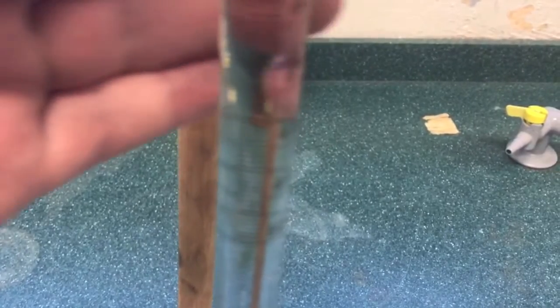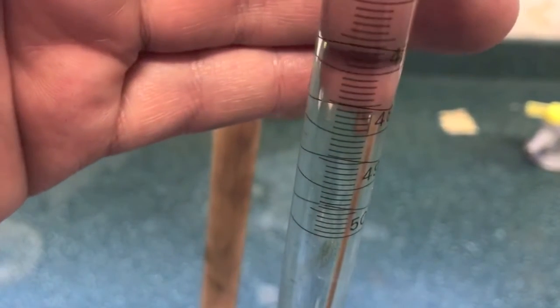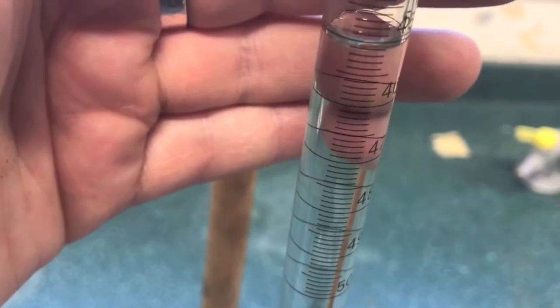This procedure is repeated as necessary until two results are obtained that are concordant. This means that the added volumes are within 0.2 ml of each other. For example, 20.1 and 19.9 would be concordant.